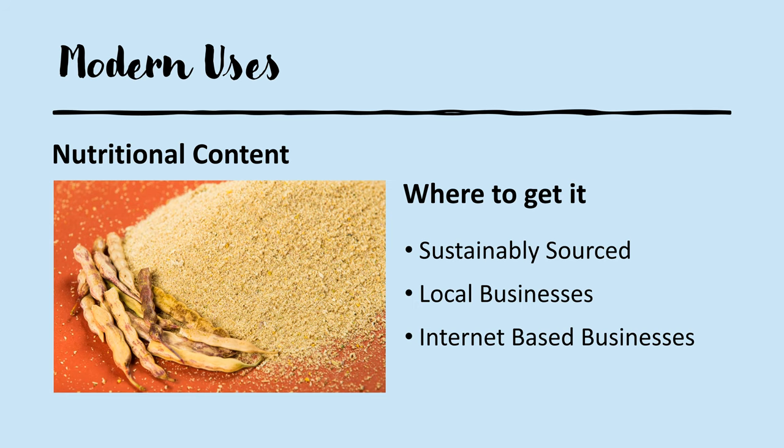Modern mesquite can be used as a flour or sugar substitute. The flour is low in calories, contains no fat, and is gluten-free. It is also a good source of fiber, potassium, iron, and niacin, and contains calcium, thiamine, riboflavin, and zinc, though in lower quantities. Mesquite powder is low on the glycemic index, high in iron, and can be used as an alternative to sugar cane. It also gives food a wonderful, rich, nutty flavor.